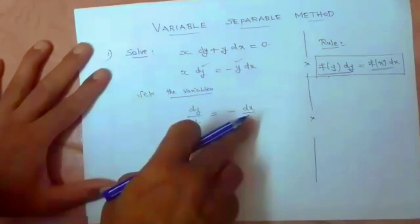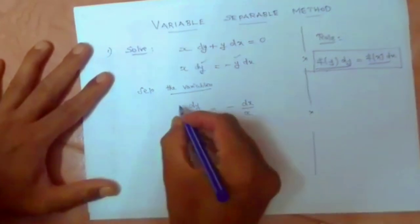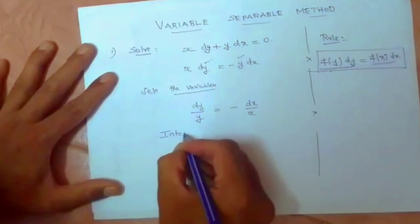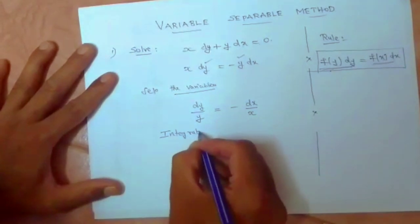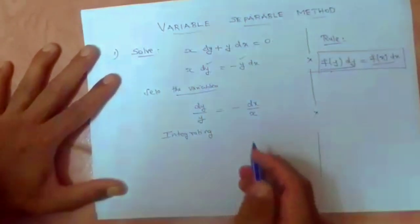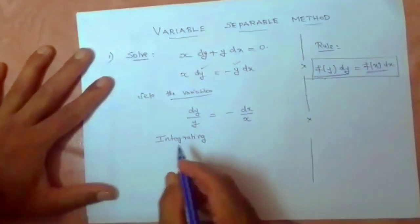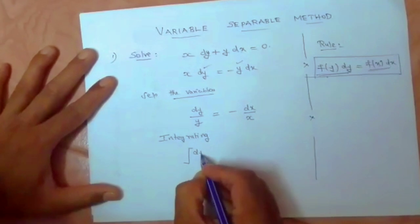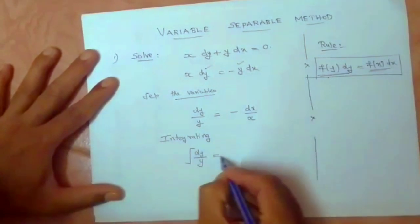Now integrating in order to get the solution for the differential equation by variable separable method. After separating the variables, we should integrate both sides. So integral dy by y equal to integral minus dx by x.